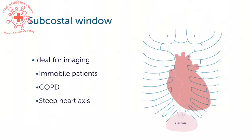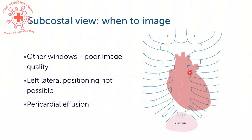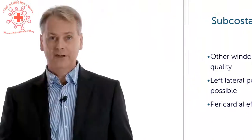It's ideal for patients who are immobile where you cannot turn them to the left, patients who have COPD where especially the apical window is obscured by the lung, and in patients with a very steep axis of the heart where the heart is hidden behind the sternum. Use it if you have poor image quality — or actually always use it, because very frequently you will get the best image quality from a subcostal window.